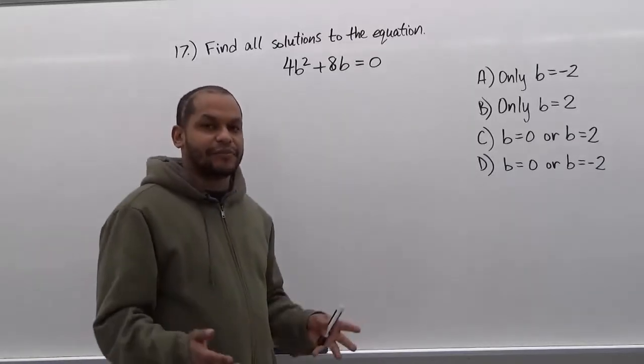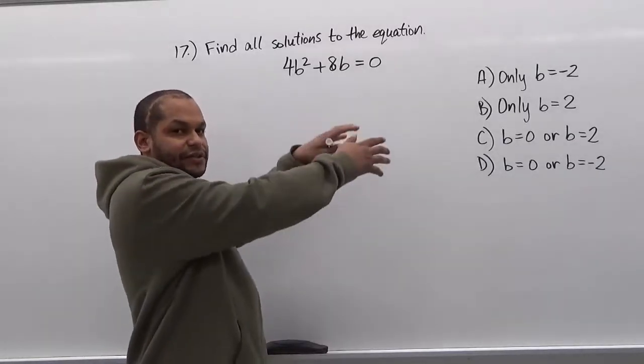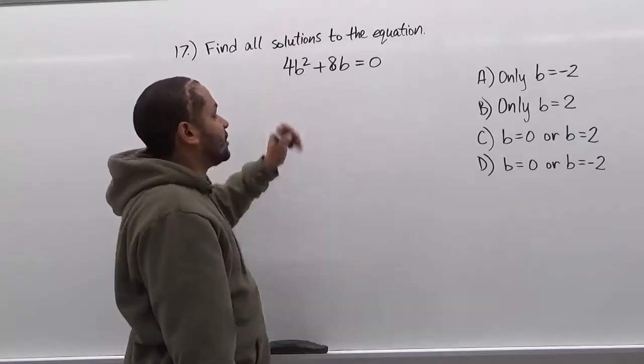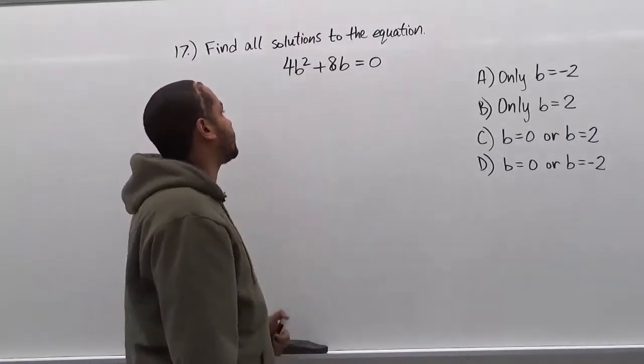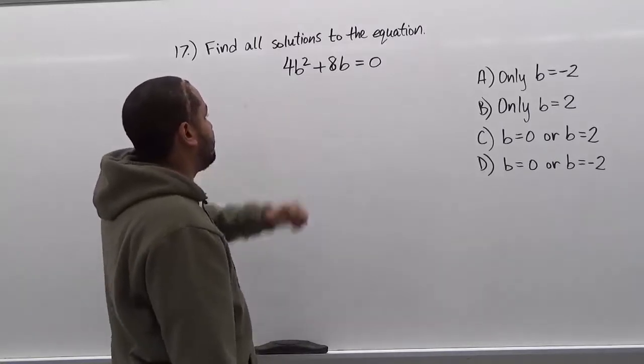Now the best way to do this kind of problem is just to use the greatest common factor to extract one of the variables here. So what we're going to do is we're going to look for the greatest common factor of 4b squared plus 8b.